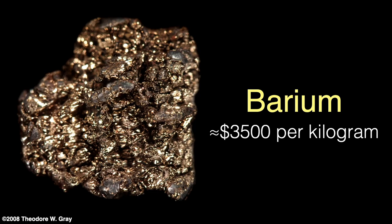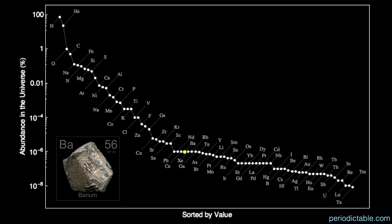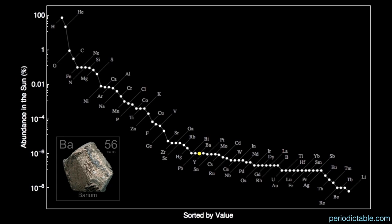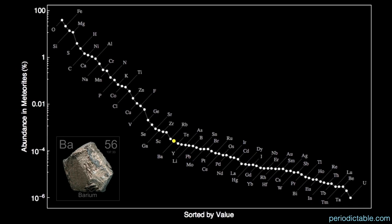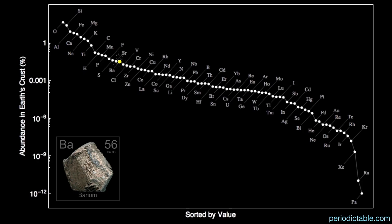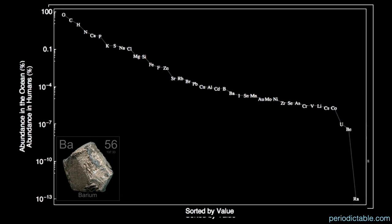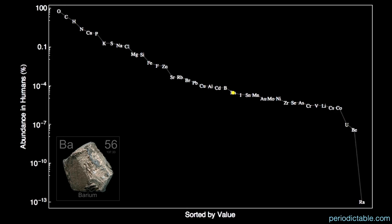The element barium is fairly uncommon in the universe, coming in as the 36th most abundant element by mass — about a millionth of a percent. It's also about the same abundance in the sun at 36th, and is the 31st most abundant element in meteorites at about 2.7 parts per million. Surprisingly, it's quite common in the Earth's crust — the 17th most common element at 304 to 340 parts per million. Barium is the 21st most abundant in the oceans and the 24th most common element in us at about 300 parts per billion.